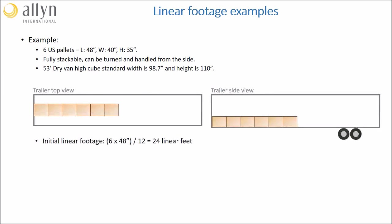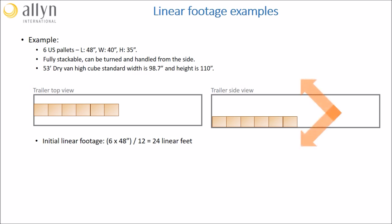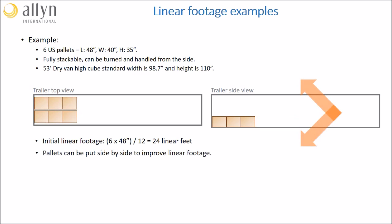If we were to put all these pallets end to end in the truck, we would end up with a linear footage of 24 feet, as shown on the top view and side view trailer diagrams. Of course, this loading plan doesn't make any sense, and the first item to consider would be to put the pallets side by side.